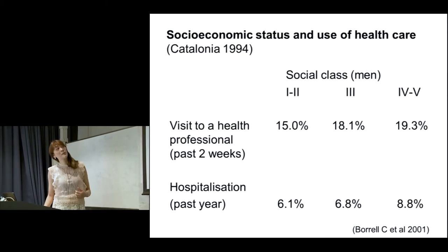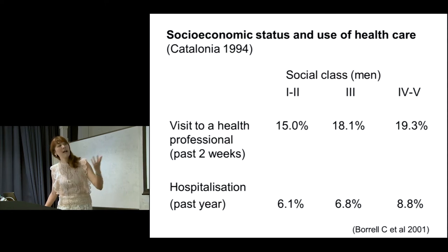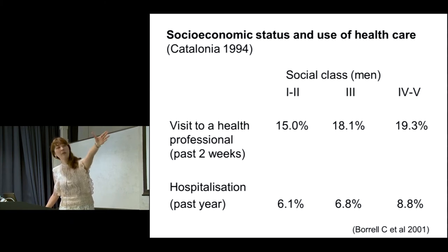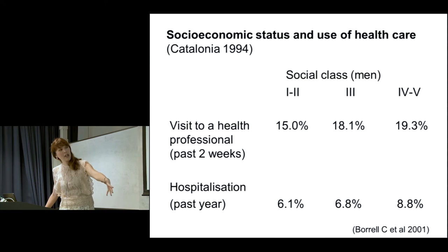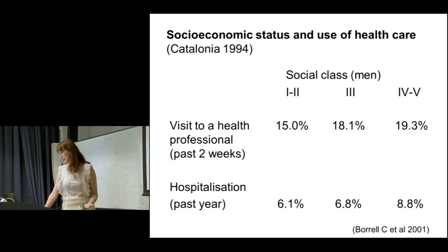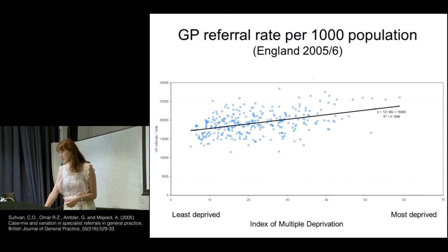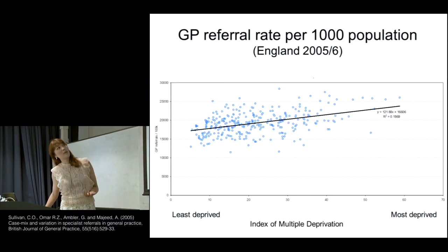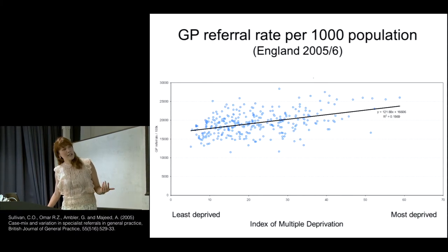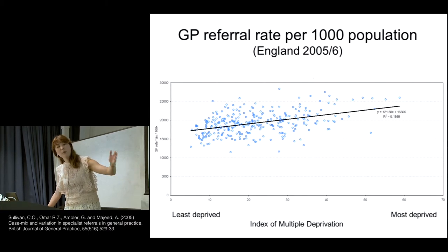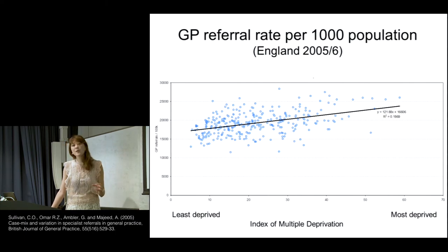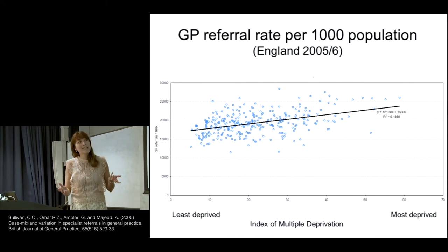Then we have socioeconomic status from another study on the use of healthcare — health visits to a healthcare professional in the past two weeks by social class. The top social class is one and two, all the way to the most deprived at social class five. We see that the most deprived have a higher visit rate to hospital and to health professionals. The direction seems to reflect need: poorer people have more hospitalization and more referrals.